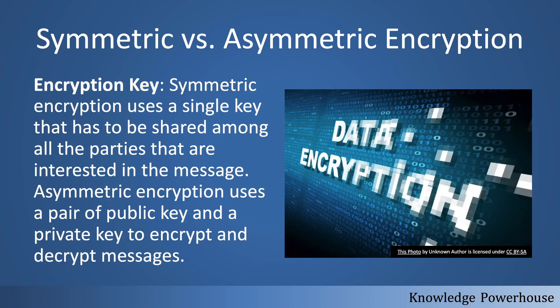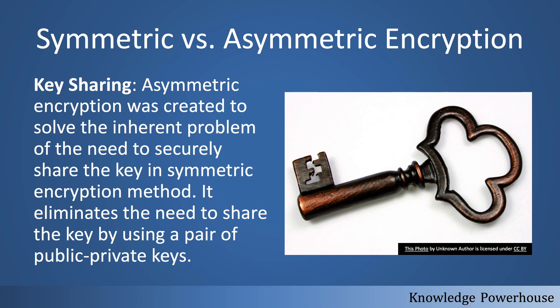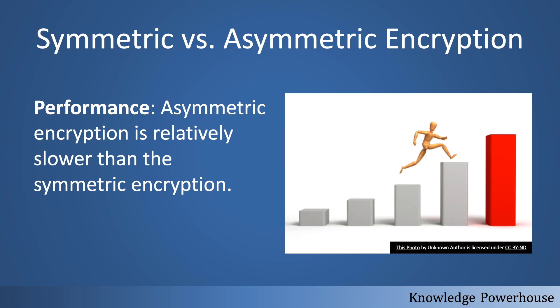To summarize the comparison: symmetric encryption uses a single shared key, while asymmetric uses a pair of public and private keys. Symmetric encryption is a very old technique — possibly thousands of years old — whereas asymmetric is relatively new, less than a hundred years old. Asymmetric was created to solve the inherent problem of securely sharing keys in symmetric encryption. From a performance perspective, asymmetric encryption is still slower than symmetric, but it is more widely used due to its many benefits.